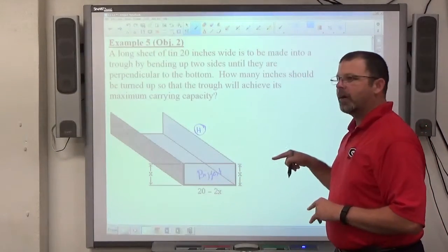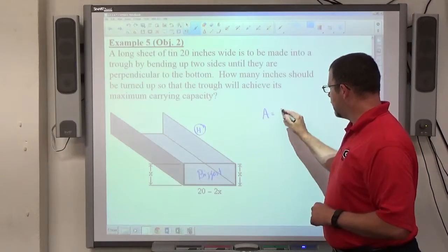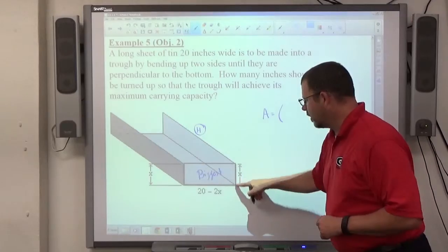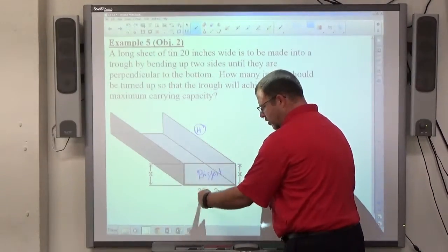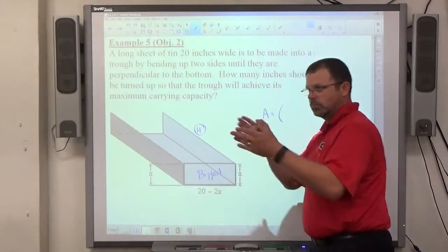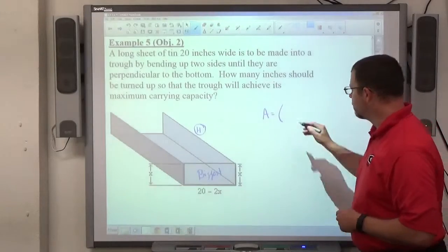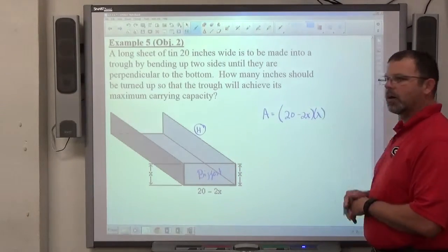So I want the biggest area I can possibly achieve. The area of the base is going to be the length times the width of the base. And if we had a 20-inch piece of tin, we're pulling up x inches on both sides. 20 minus 2x is left at the bottom. x is the width of each rectangle. So 20 minus 2x times x would be the area formula.